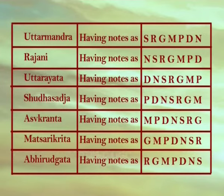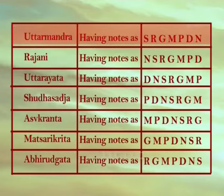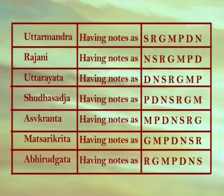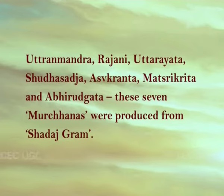It is important to mention that the first moochna of Shadaj gram, Uttramandra, was started from Shadaj sa of the middle octave. The remaining six moochnas were started from ni, dha, pa, ma, ga, re notes respectively of the lower octave, using further notes accordingly in ascending order. So Uttramandra, Rajni, Uttrayita, Shuddhashadja, Ashwakranta, Matsarikrita and Abhirudgata — these seven moochnas were produced from Shadaj gram.